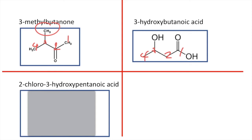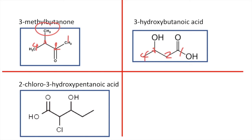Last but not least we've got 2-chloro-3-hydroxypentanoic acid. We draw pentanoic acid — five carbons — so that's one where the carboxylic acid is, then two, three, four, and five. As the name says, on carbon number two is where we put the chlorine atom.